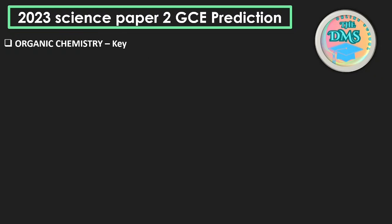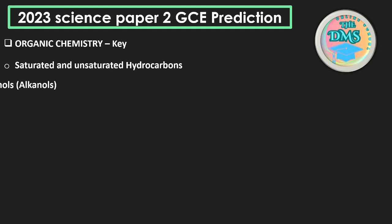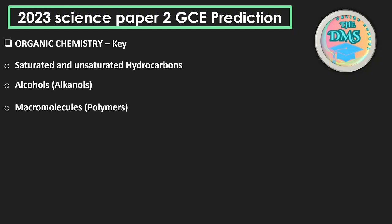Organic chemistry is a key topic. Under organic chemistry a question can come on saturated and unsaturated hydrocarbons — alkanes and alkenes. Alcohols are a key subtopic and have always been coming since 2015, so this is a must. The other subtopic is macromolecules or polymers, which includes natural and artificial macromolecules. That brings us to the end of the 2023 Science Paper 2 GCE prediction.